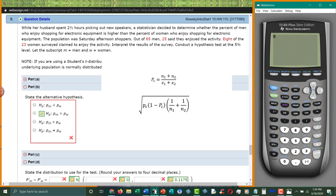To calculate those things, we need to find P_C. So P_C is equal to the total number of successes - 25 men and 8 women. 25 plus 8 divided by how many total people there were, 65 plus 23. This is the combined probability, 0.375.